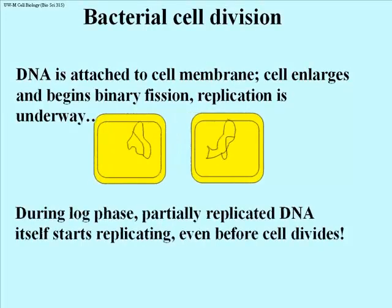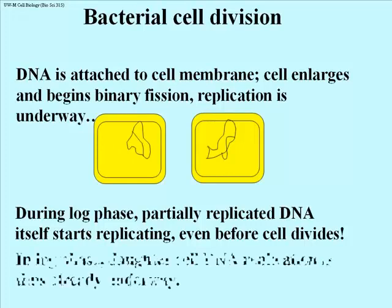During the log phase, partially replicated DNA is itself already beginning to replicate. So what you see as these two cells have divided is that there is already part of a new chromosome attached to the original chromosome in these cells, and this has begun to happen even before the cells divided. In the log phase, daughter cell DNA replication is well underway before the daughter cells actually separate by binary fission.